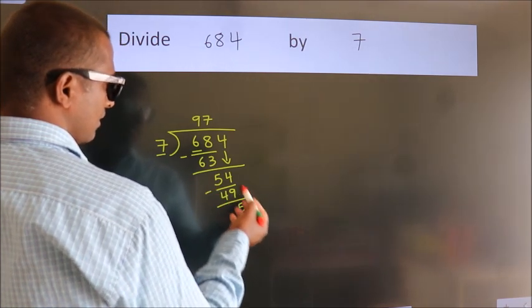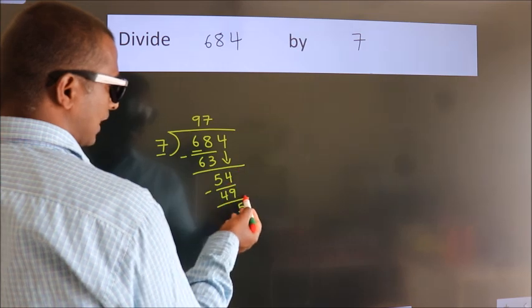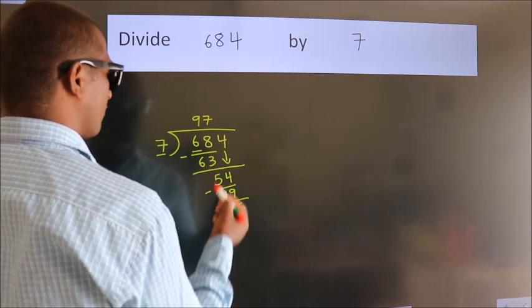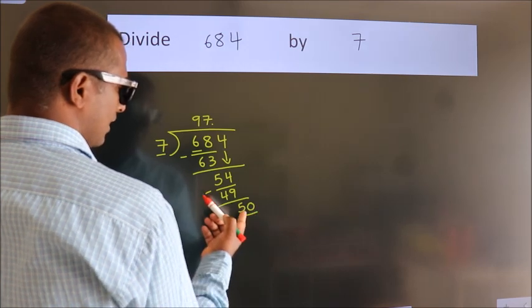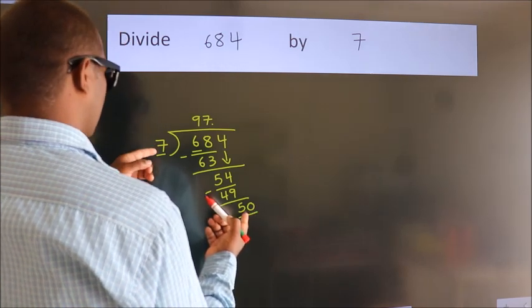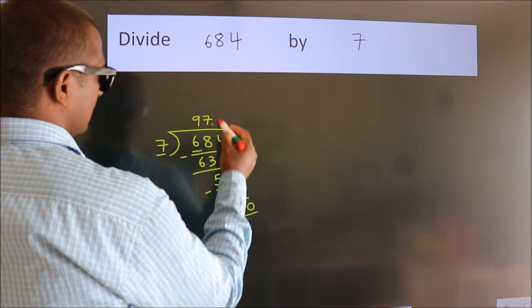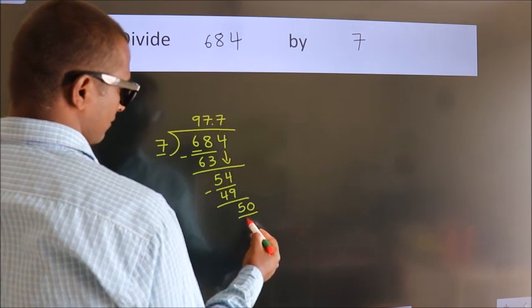After this, no more numbers to bring down. So what we do is put a dot and take 0. So, 50. A number close to 50 in the 7 table is 7 nines, 49.